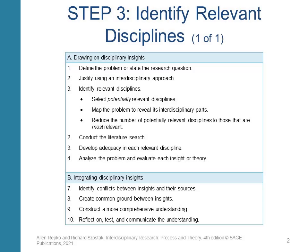There are three parts or sub-steps involved, including selecting a list of many potentially relevant disciplines, mapping the problem to better understand the contributions of each of these disciplines, and narrowing the initial list to include only the most relevant disciplines.